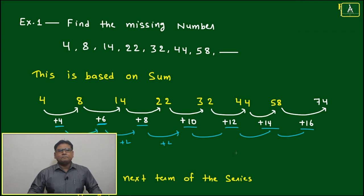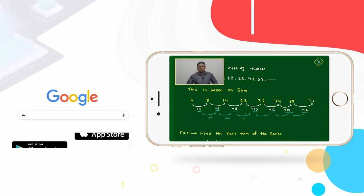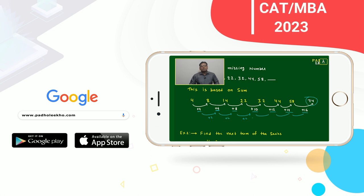We can say the differences between two consecutive terms follow an AP or arithmetic progression. Based on that, we will be able to find that after 58 we have to add 16 and the next term will come to 74.